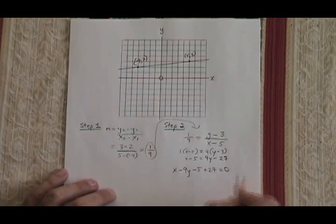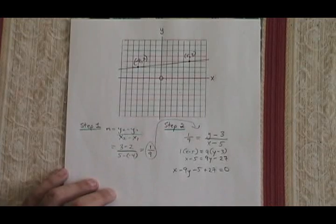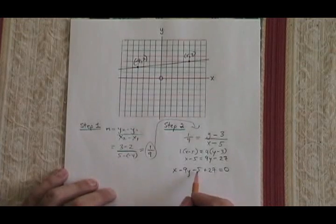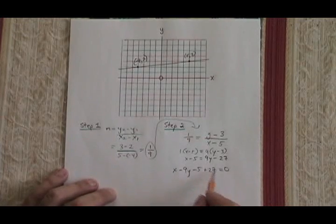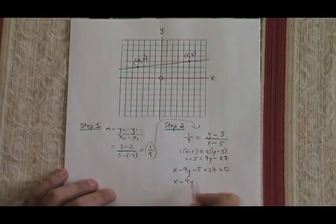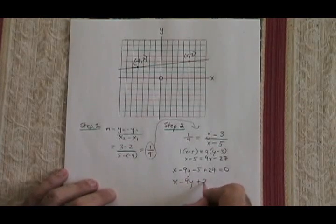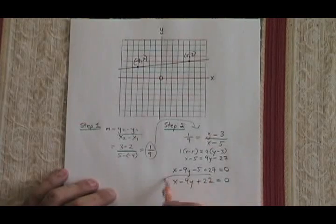And don't forget to write equals 0. Your equal sign still has to be there. Simplifying, all I have left to do is combine these two constant terms. So I have x minus 9y plus 22 equals 0. This is the answer.